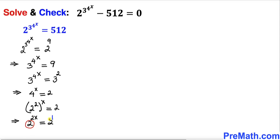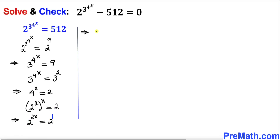So we can write 2x equals to 1. Now let's go ahead and divide both sides by 2. Our x value turns out to be simply 1 over 2.